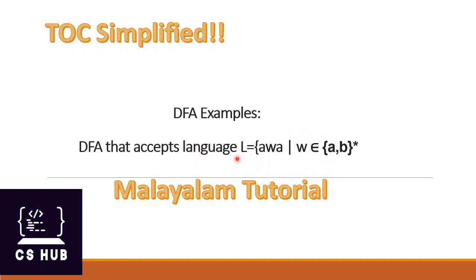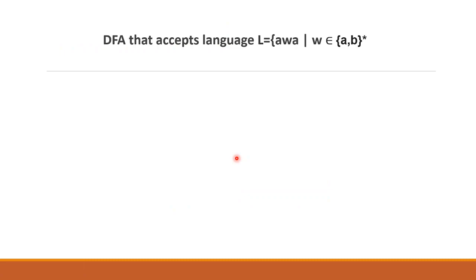We have to design a DFA which accepts this language L = {awa | w ∈ {a,b}*}. Here w ∈ {a,b}* means w is any combination of 'a' and 'b' including epsilon. The star means zero or more combinations, so w can be epsilon, a, b, aa, ab, bb, or anything — any combination including epsilon.